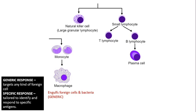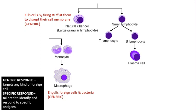First of all, the macrophage. This is a cell that basically moves around and engulfs anything that's foreign — that's part of our generic response. It's not tailored to a particular bacteria or a particular virus. Another part of our generic response is the natural killer cell — not to be confused with killer T cell, which is something different — but the natural killer cell is also part of the generic response.